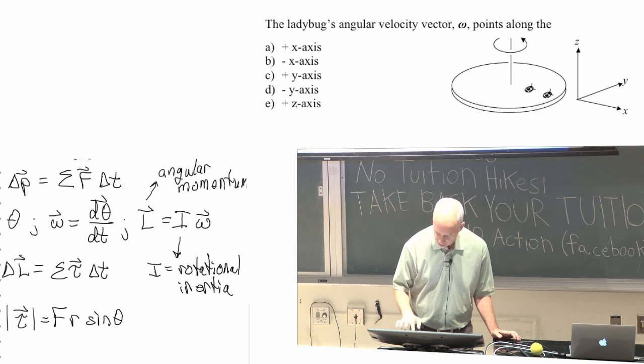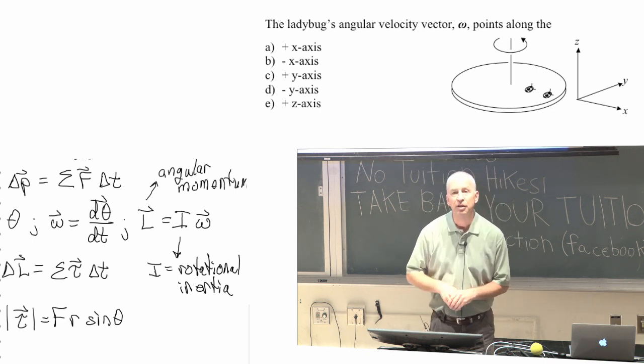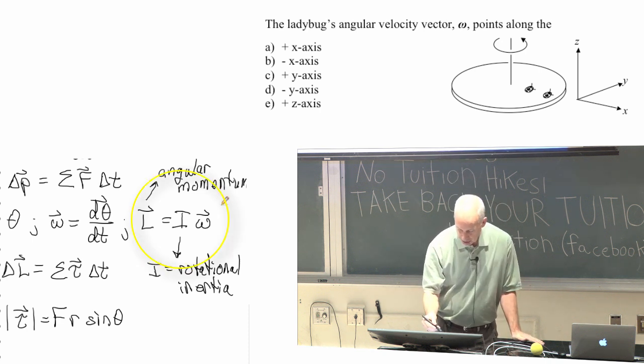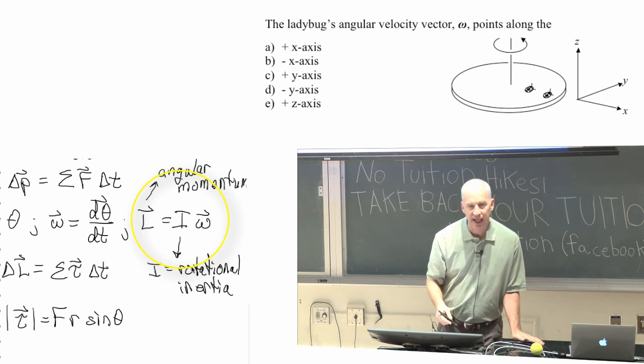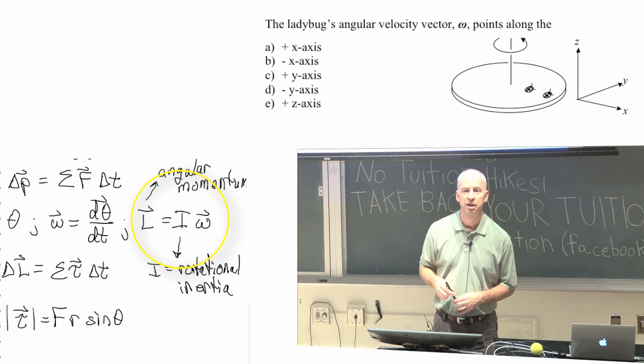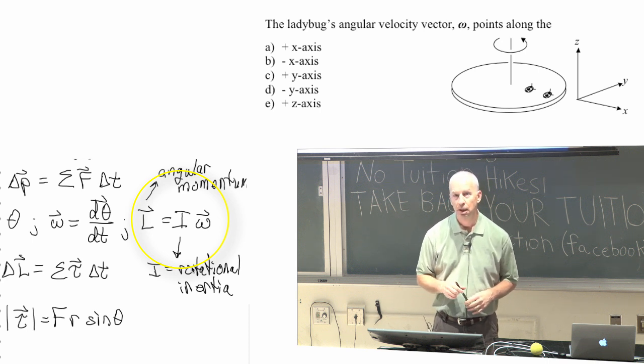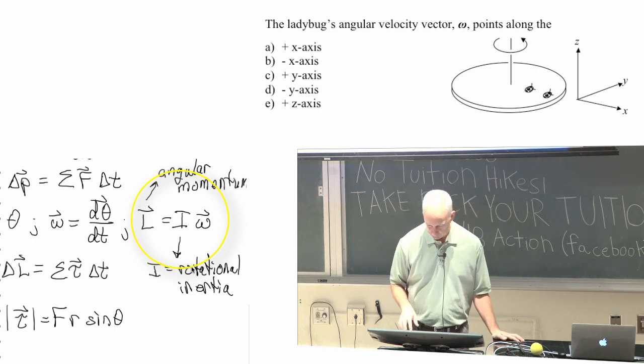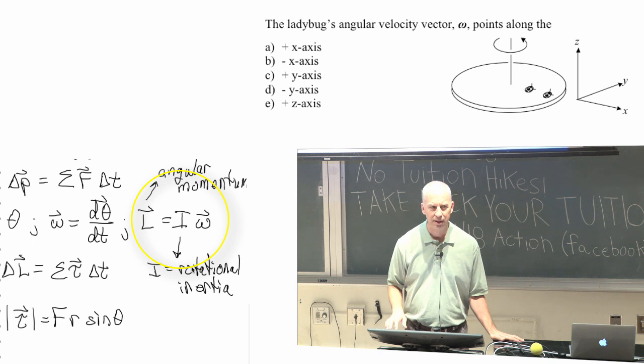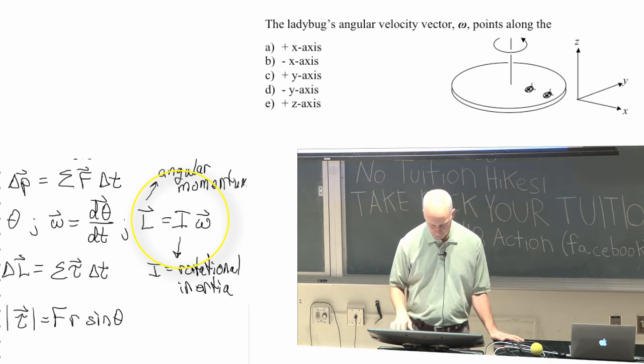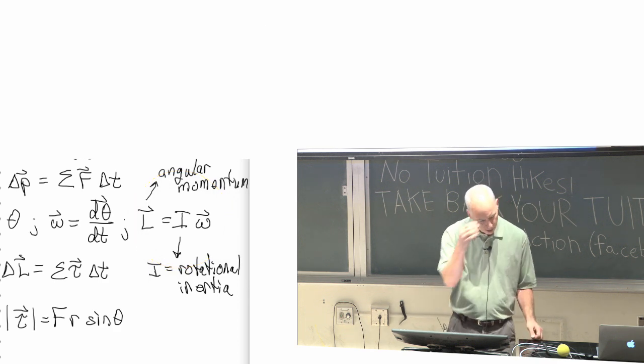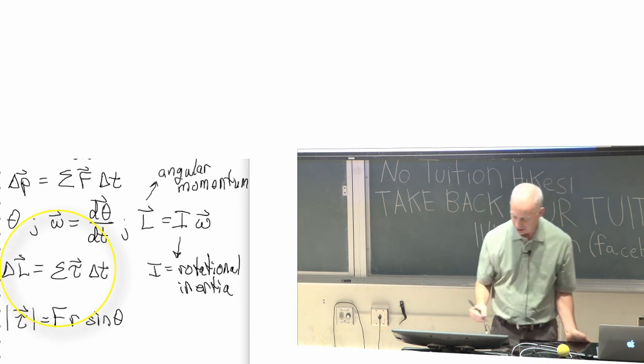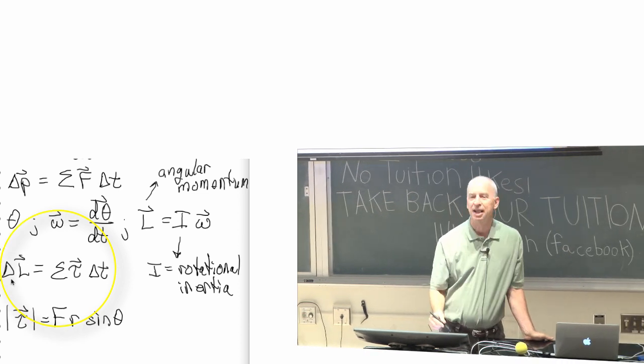All right, so right hand rule told you that the angular velocity is in the z direction. I would also conclude from that, or you could, that since the angular momentum is in the same direction of the angular velocity, that right hand rule also tells you the direction of the angular momentum. L is in the z direction. Any questions about... All right, so I wrote something here. I wrote how you change the angular momentum.